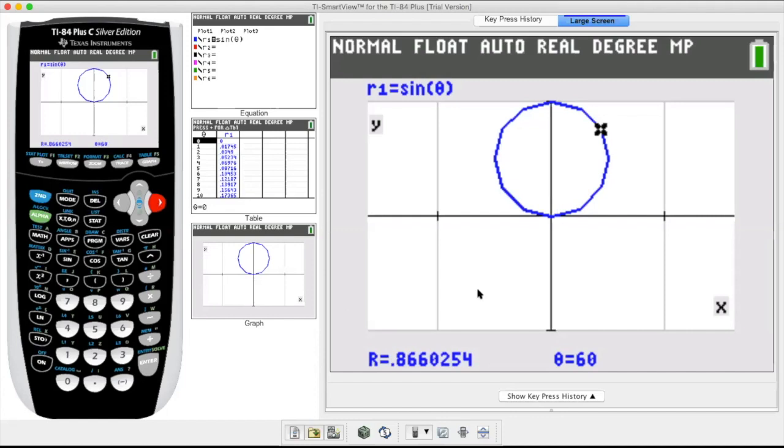There's your 45 and your 0.707, which is root two over two. There's your 60 degrees and your root three over two, which is 0.866. So again.